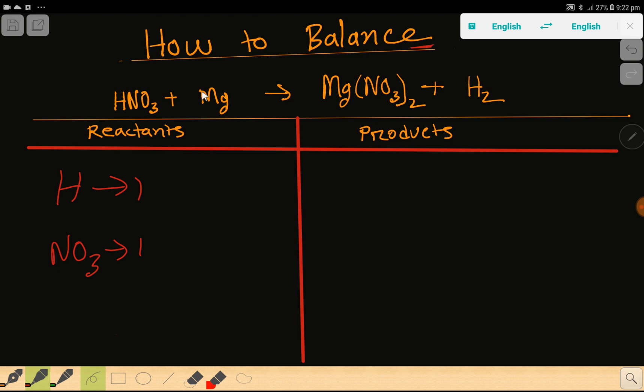Then we have magnesium, that is one. And in the right hand side we have magnesium, that is one. Then we have NO3, that is nitrate, which is two.